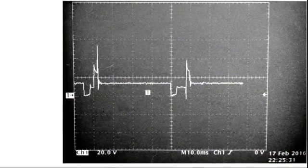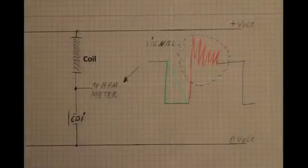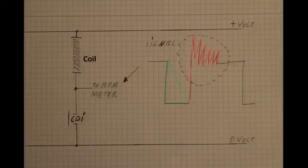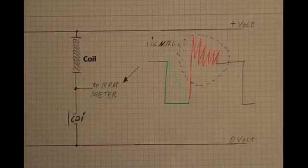This oscilloscope picture shows us the signal by around about 1000 rotations per minute on my bike. So the signal comes between the coil and the CDI. This is where most bikes deliver the signal. The coil is connected to plus voltage and the CDI will close the circuit against the ground or zero voltage.